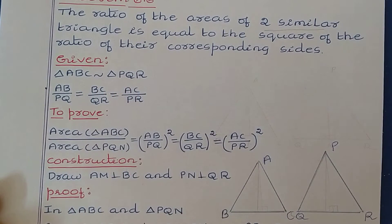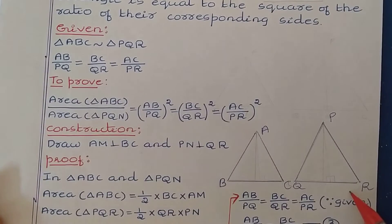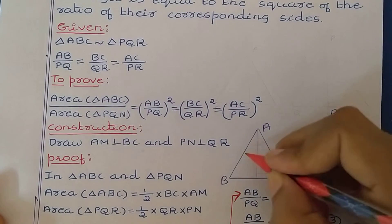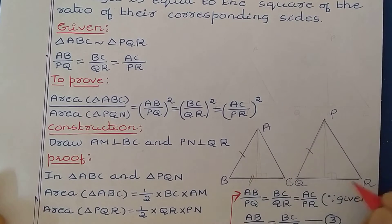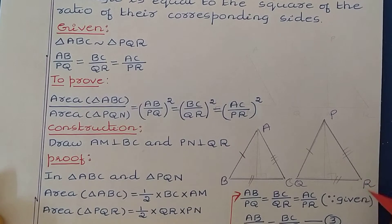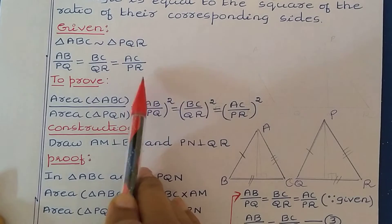We know if two triangles are similar, then their corresponding sides are in equal proportion. So for ABC and PQR: for AB the corresponding side is PQ, for BC the corresponding side is QR, for AC the corresponding side is PR. So we can write AB/PQ = BC/QR = AC/PR.